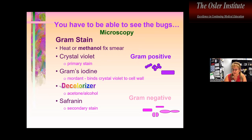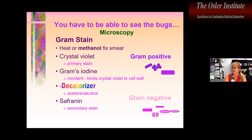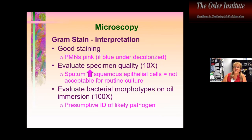The decolorizer removes fats and lipids from the cell. Gram-negative organisms have a very thin cell wall and a lot of lipid, so the crystal violet gets wiped off with the decolorizer. You then need a counterstain — most laboratories use safranin, though you can also use carbol fuchsin. Gram-negative organisms pick up the counterstain, making them pink.